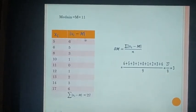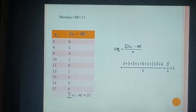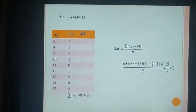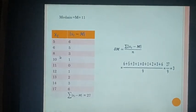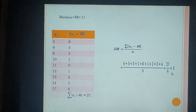The sum of all |xi − M| is 27. Applying the formula: δM = Σ|xi − M| / n = 27 / 9 = 3. So the mean deviation about the median is 3. Thank you.